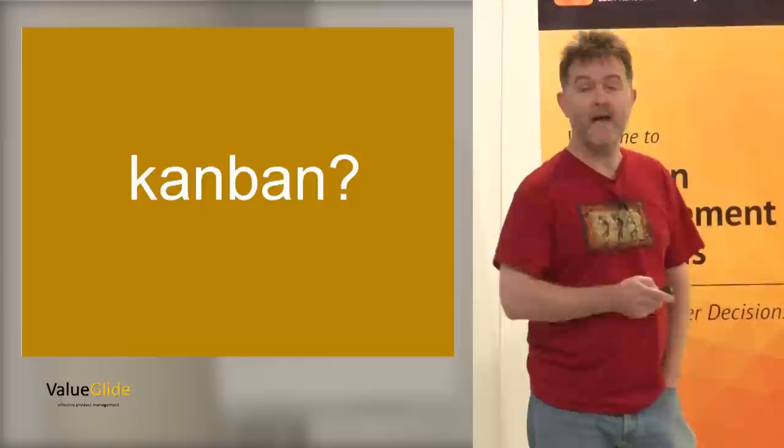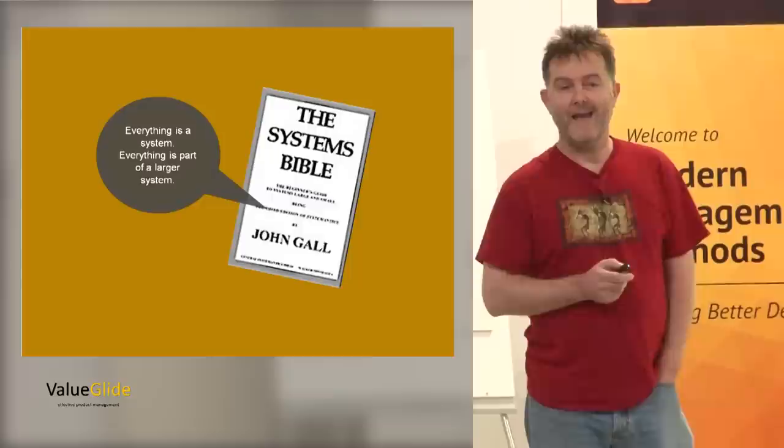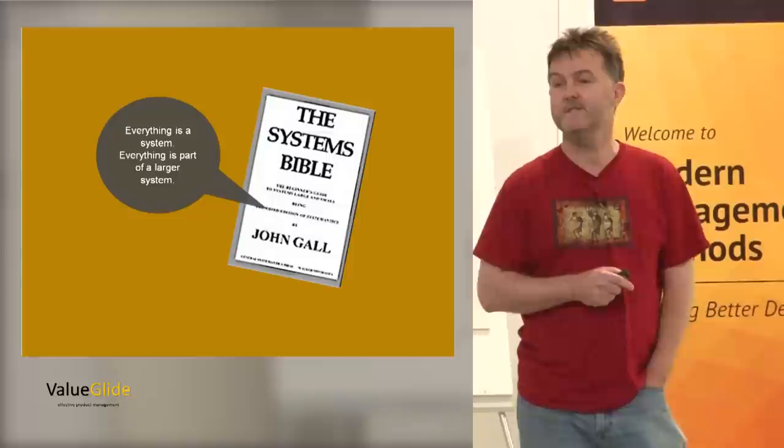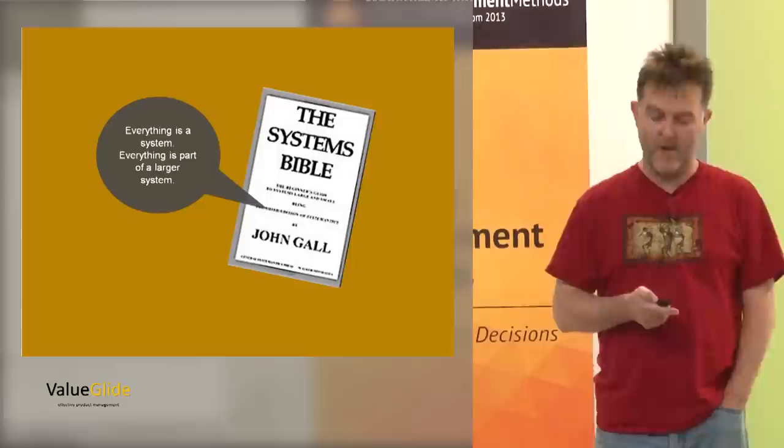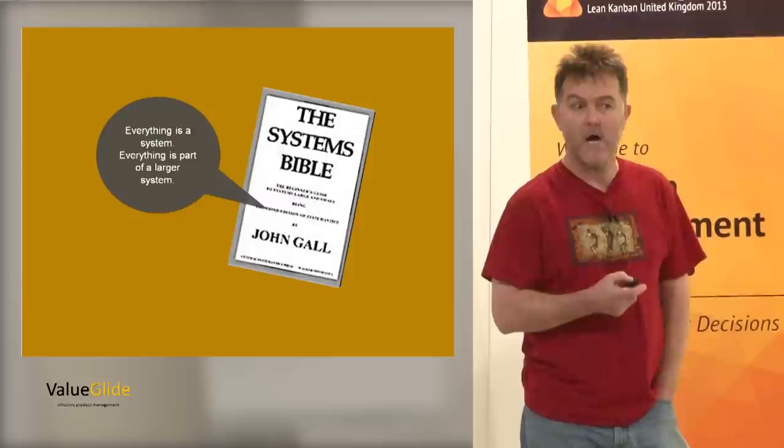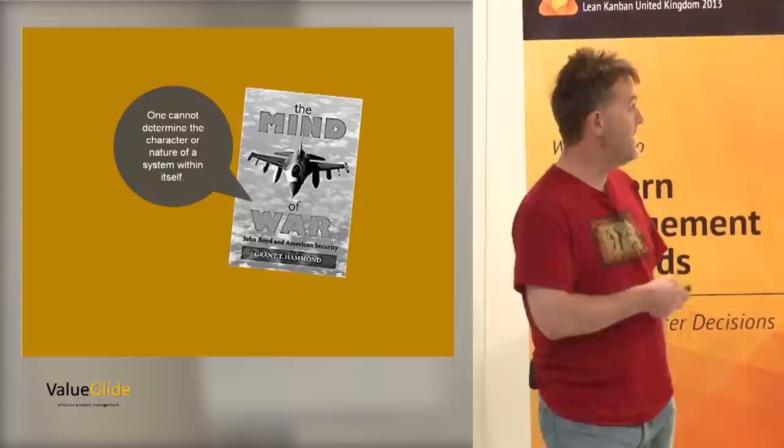So the question is, is that enough to know what a Kanban is? And the answer is no, because a Kanban is a system. An individual Kanban is a system, and from systems thinking, we know that everything is a system and everything is part of a larger system. So if you want to understand what a Kanban is and how a Kanban is supposed to work, you have to ask yourself the question, what is the Kanban system that the Kanban is inside?